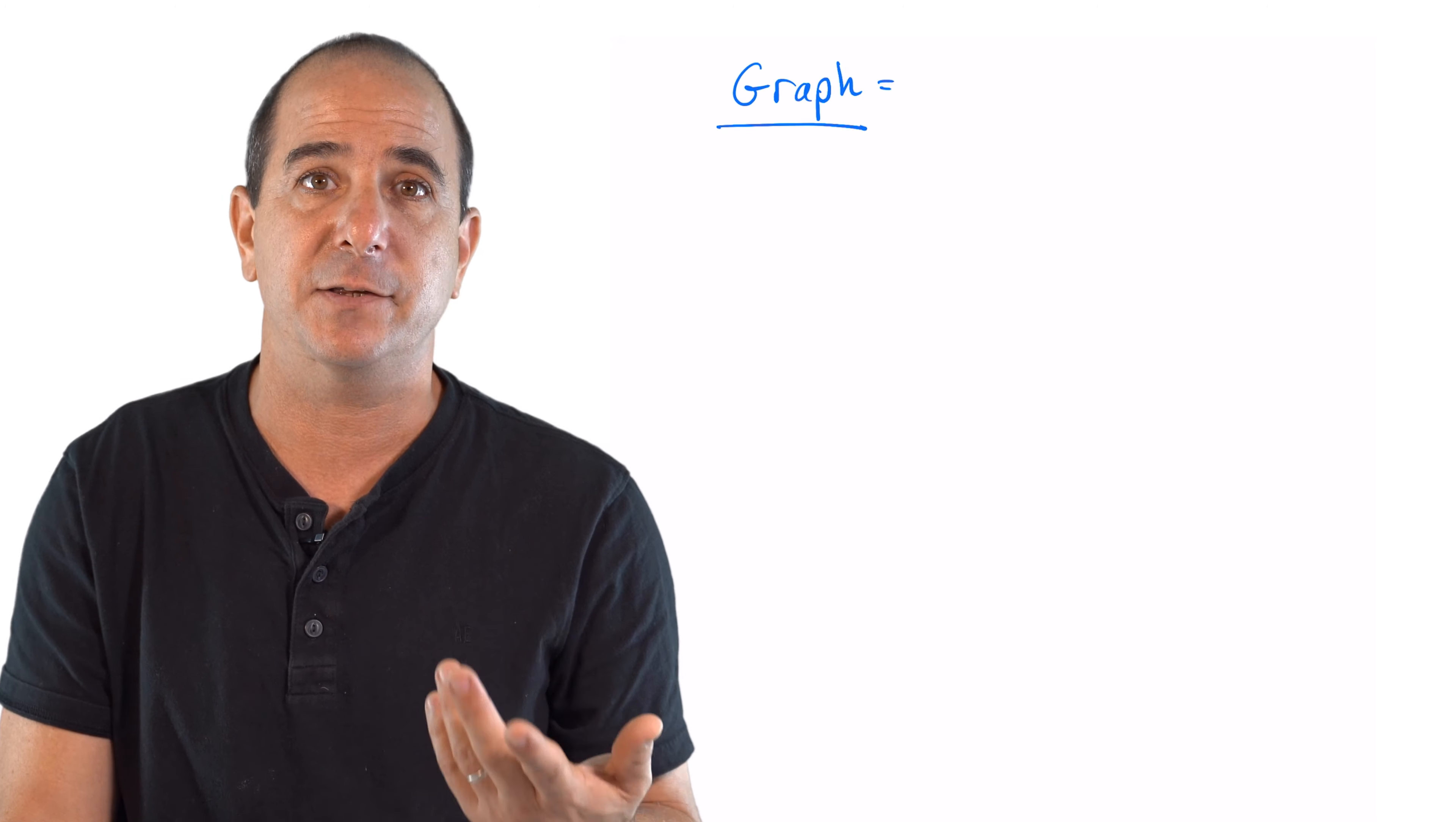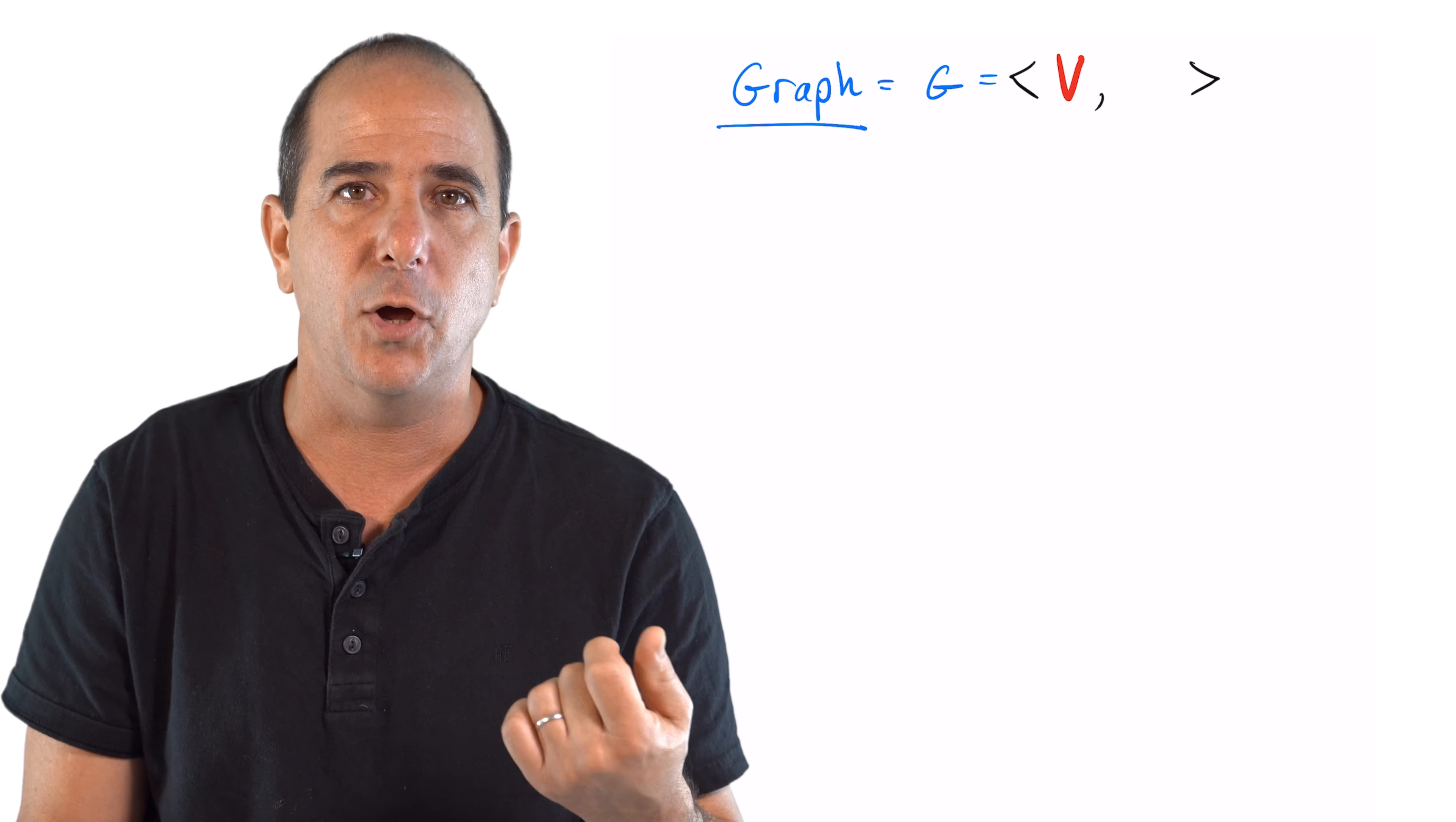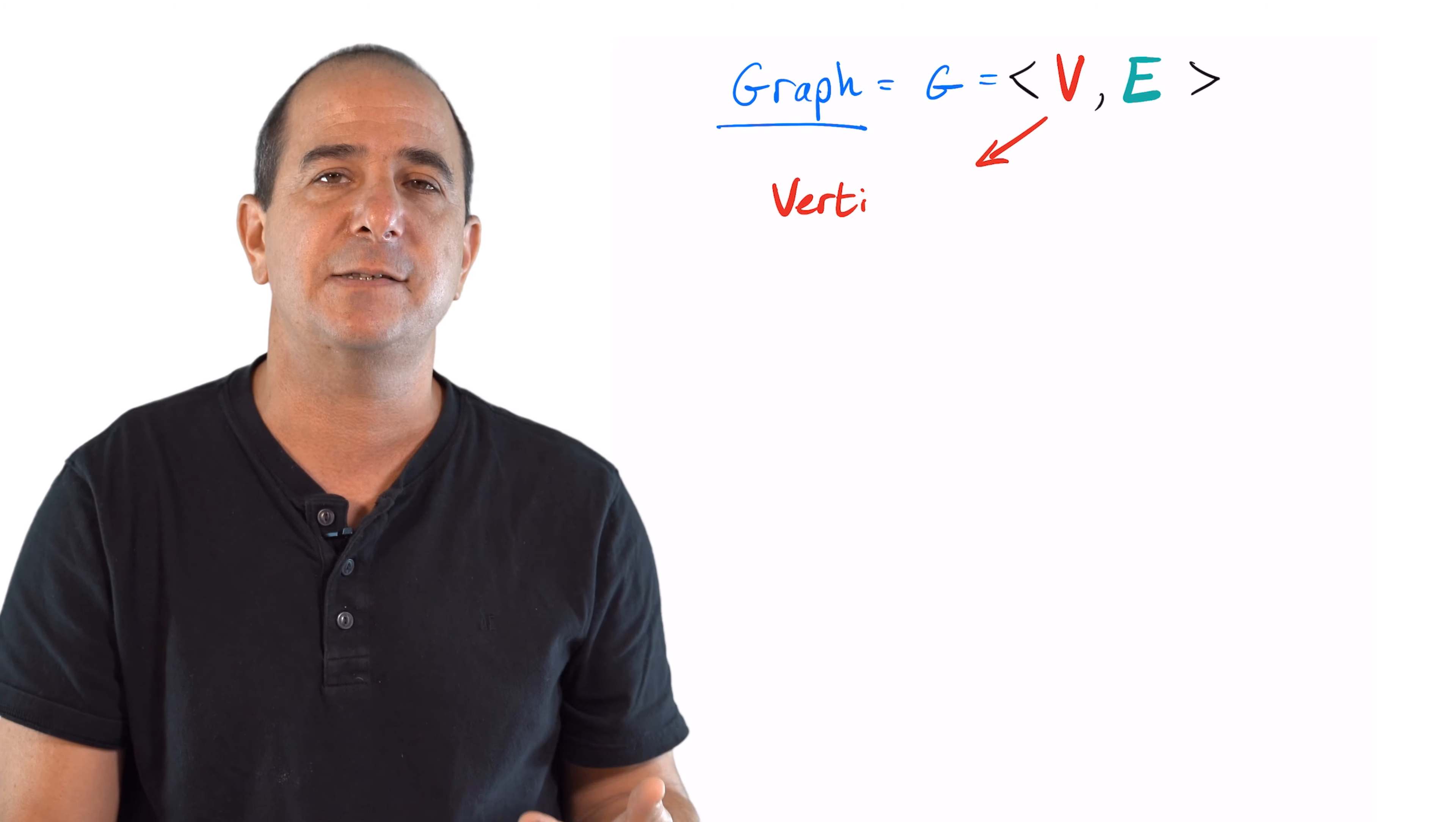Right, so let's formally define a graph. A graph is a data structure composed of two sets: V, which is a set of nodes, and E, which is a set of edges.